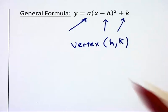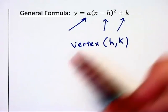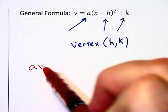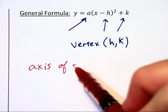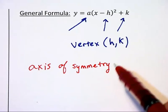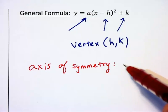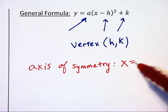Now there's two other features we need. And if we've identified h, k, then it's pretty much already found the axis of symmetry. Your axis of symmetry is going to be a line that you can draw through the vertex that pretty much cuts the parabola in half. This will be the equation x equals h.